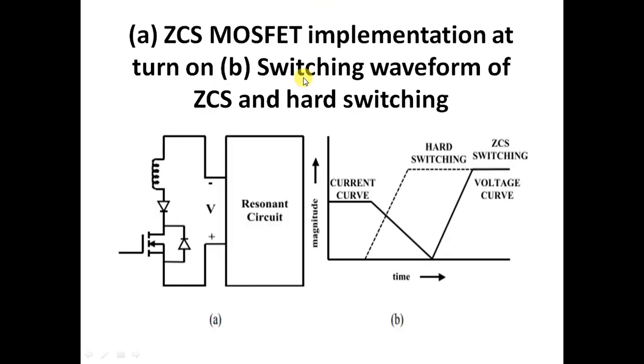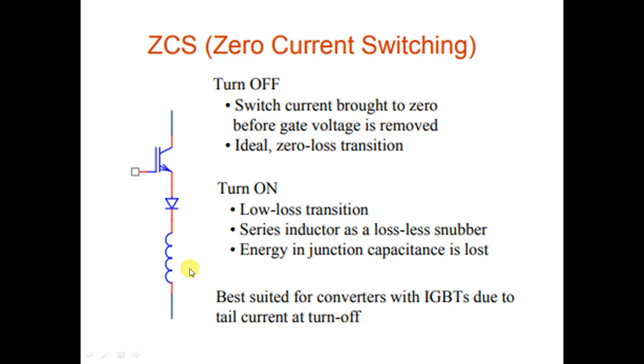For ZCS, the capacitance of the device in addition with L will produce soft switching. This combination of L and C will produce a current zero. When the current becomes zero, then switching takes place. Power loss is V into I. If I is zero, power loss will be zero.